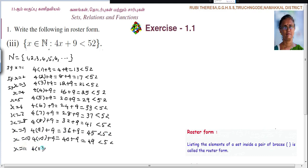Next x equal to 11. 4 into 11 plus 9. That is 44 plus 9, that is 53. This is greater than 52. So x equal to 11 you should not take. Then what are the elements? What is the answer?